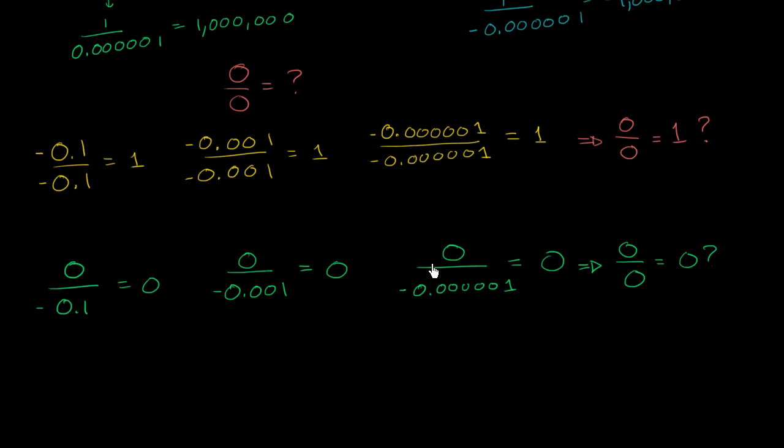And because they're equally valid, and frankly, neither of them is consistent with the rest of mathematics, once again, mathematicians have left 0 divided by 0 as undefined.